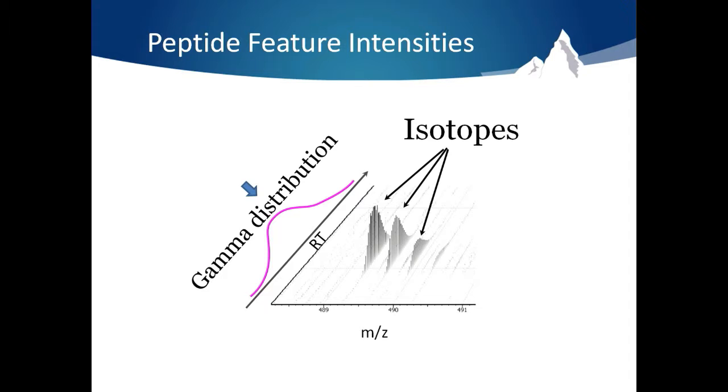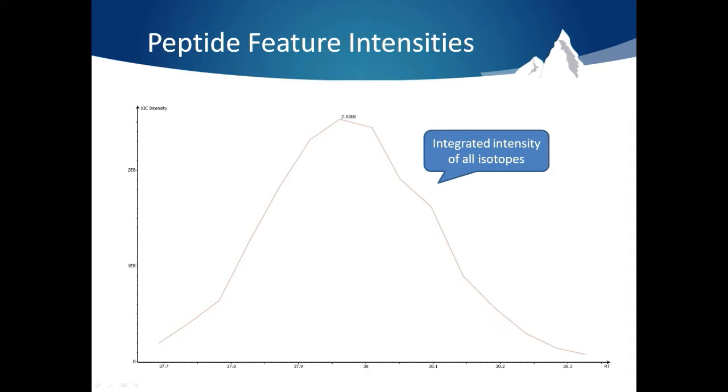PEAKS will automatically detect these peptide features and calculate the area under their retention time curve. It will include the area of all isotopes associated with the feature within 5% relative intensity of the most intense peak. These areas are then integrated into the XIC curve shown here. From this the area under the curve can be easily calculated.